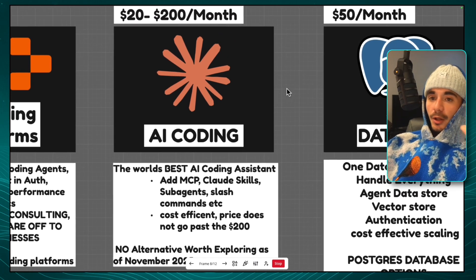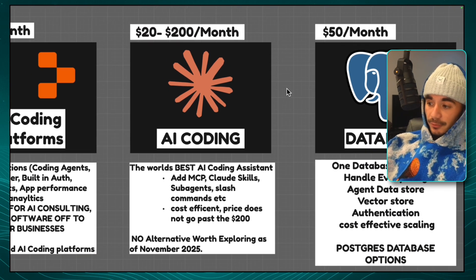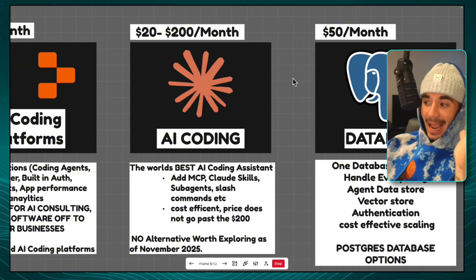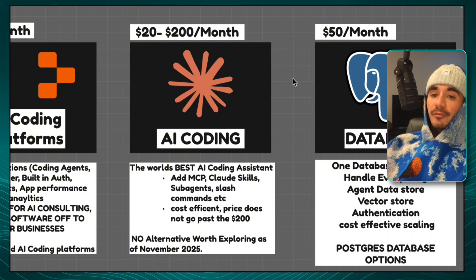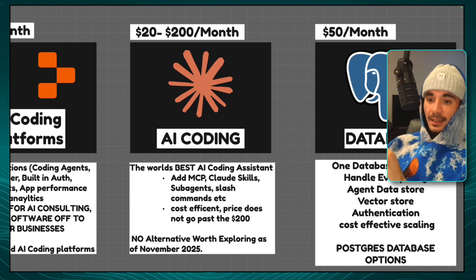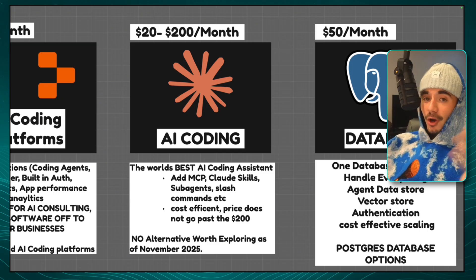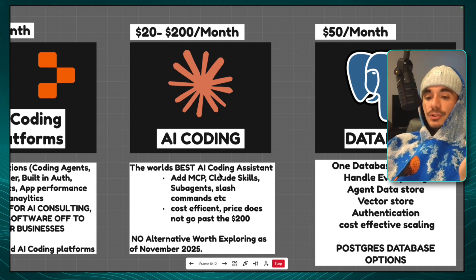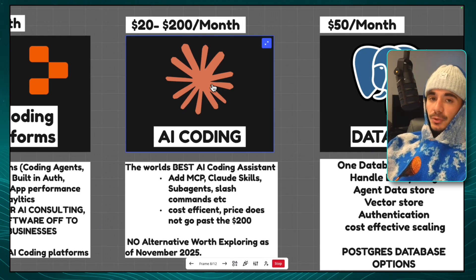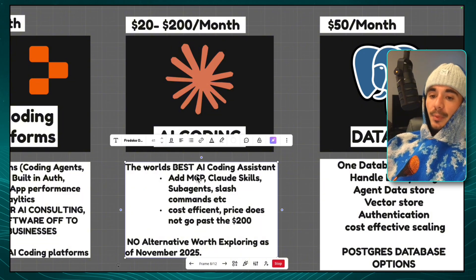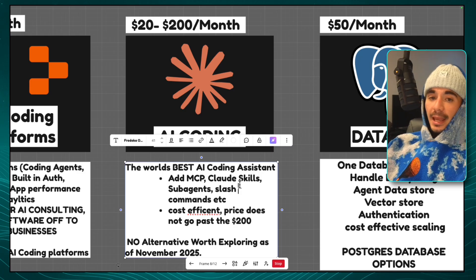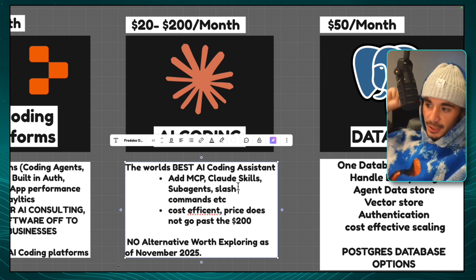Let's talk about the AI coding model. I've been coding for at least two years straight, and I have to say that Claude Code is by far the best coding model in the world — and it always has been. Anthropic has always been focused on being a developer-first AI model. ChatGPT, Gemini, and Grok are all copying them now, but they're still nowhere near. In a future video I'll get into Claude Code skills and MCPs, which basically give your coding agent superpowers, along with slash commands to customize your agent further.